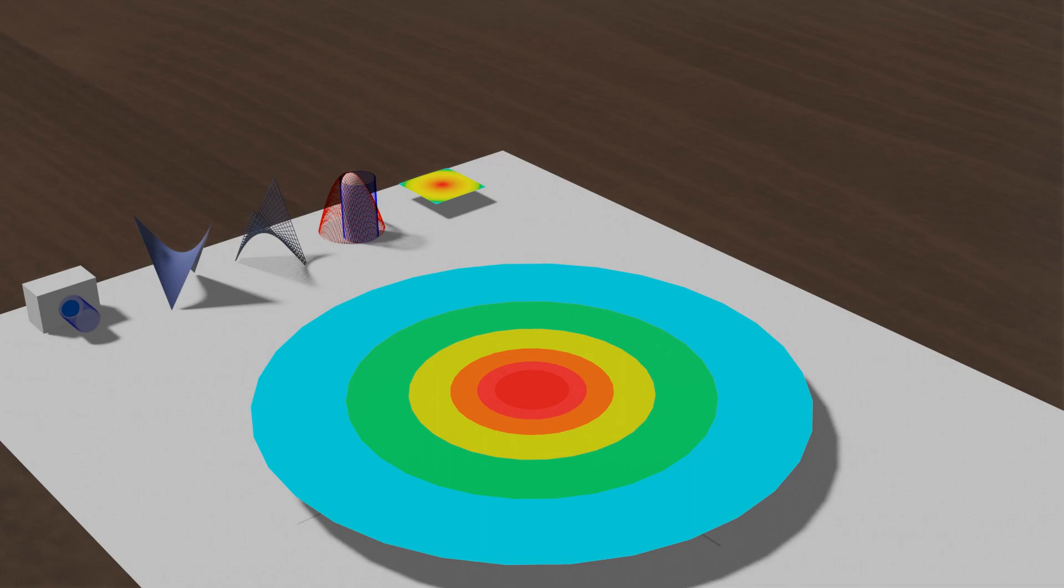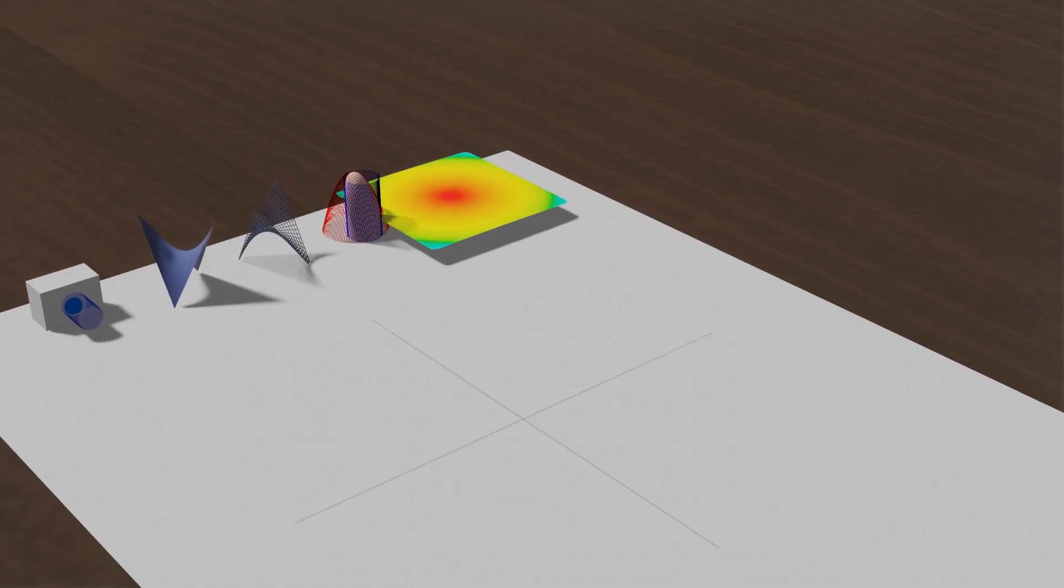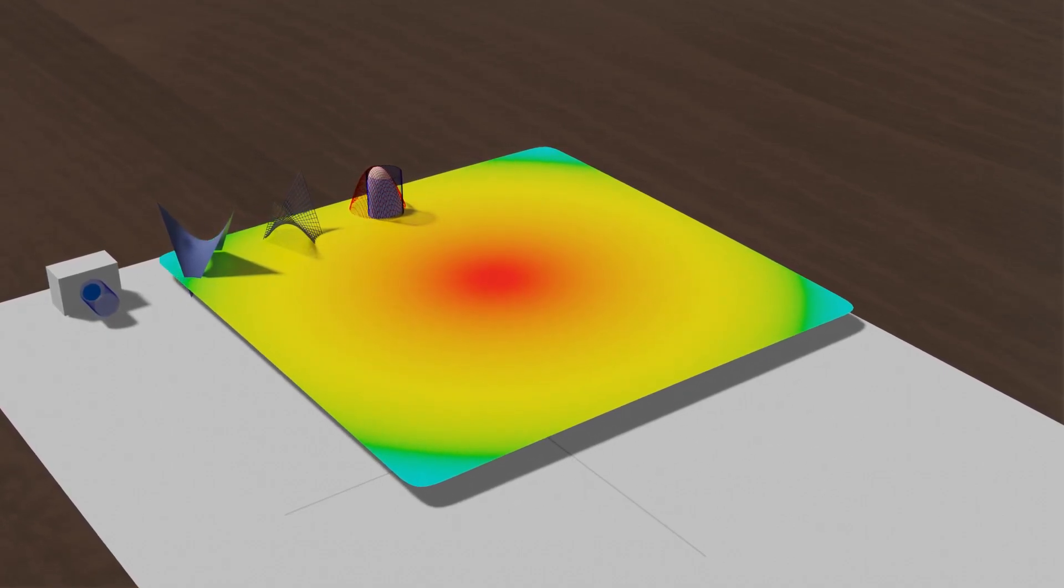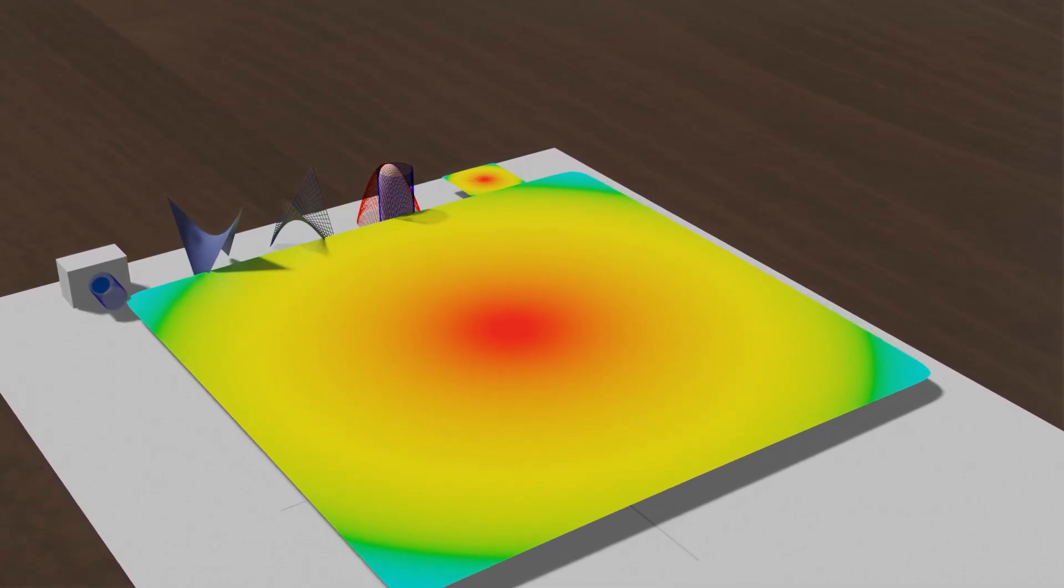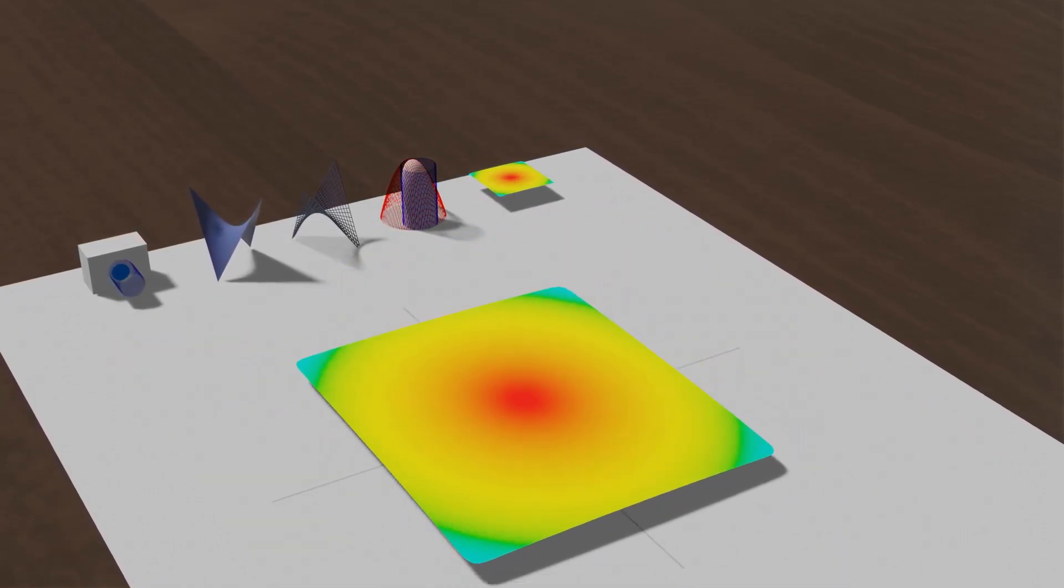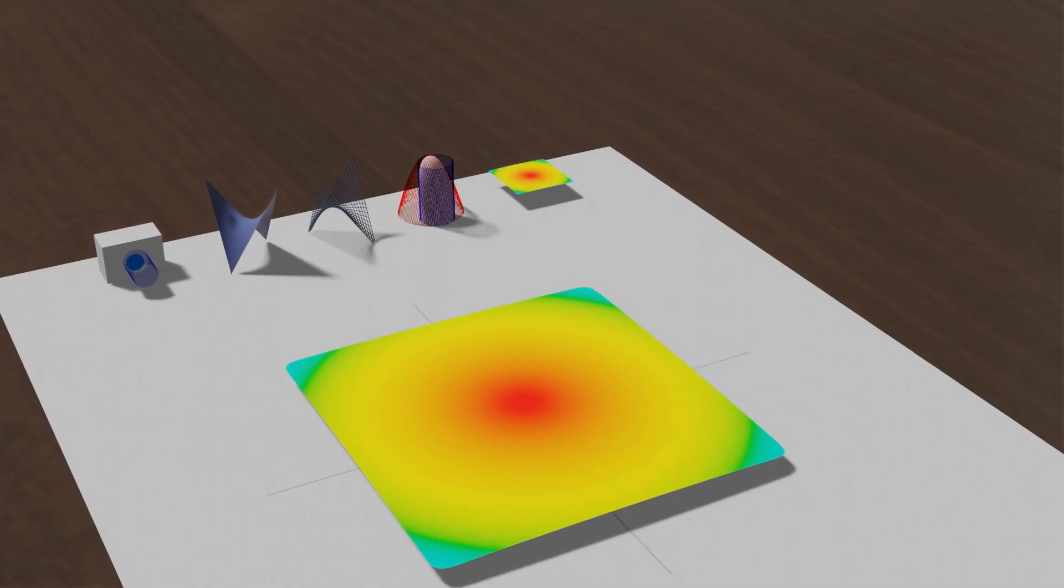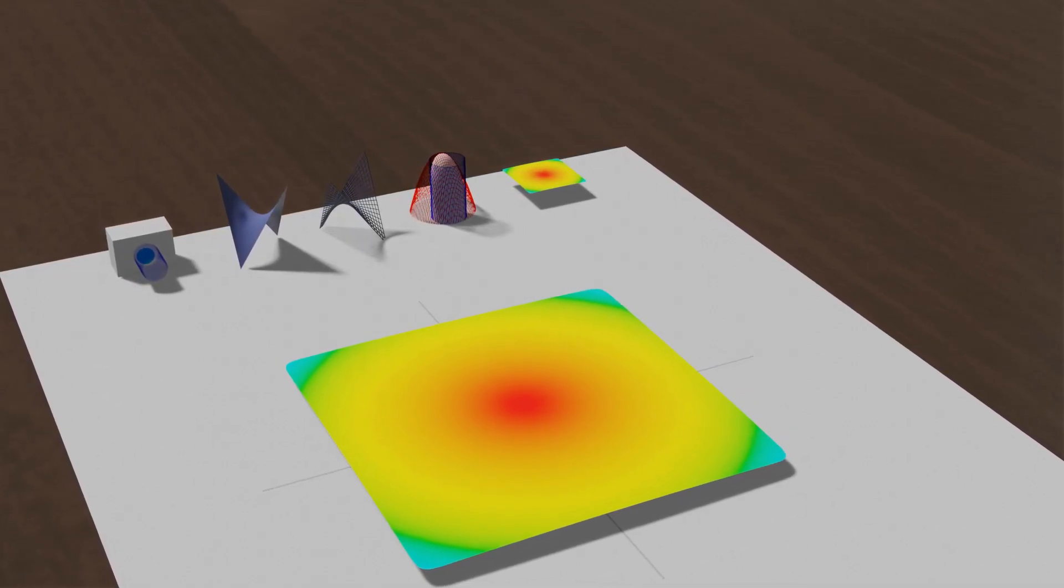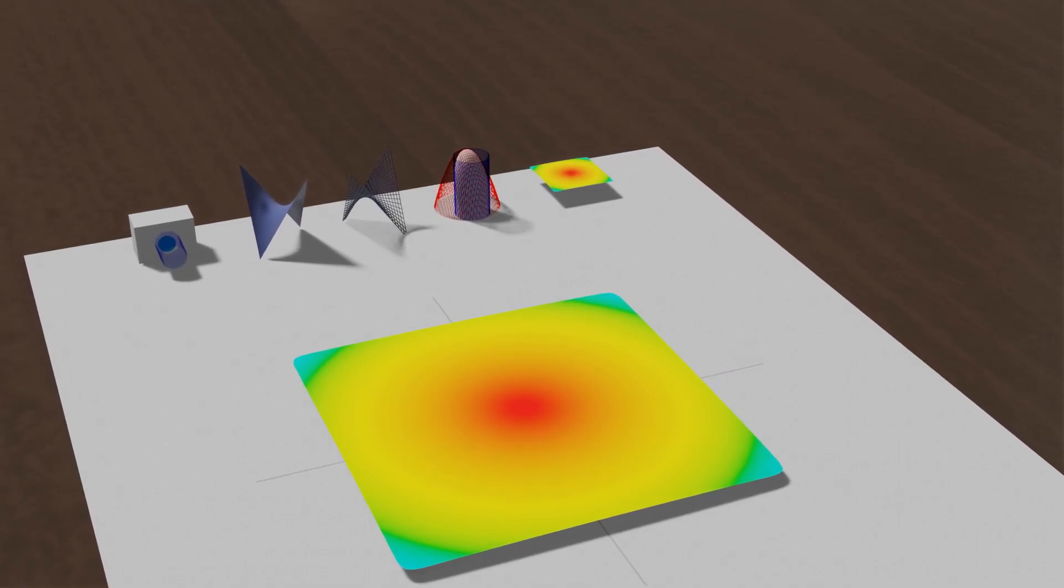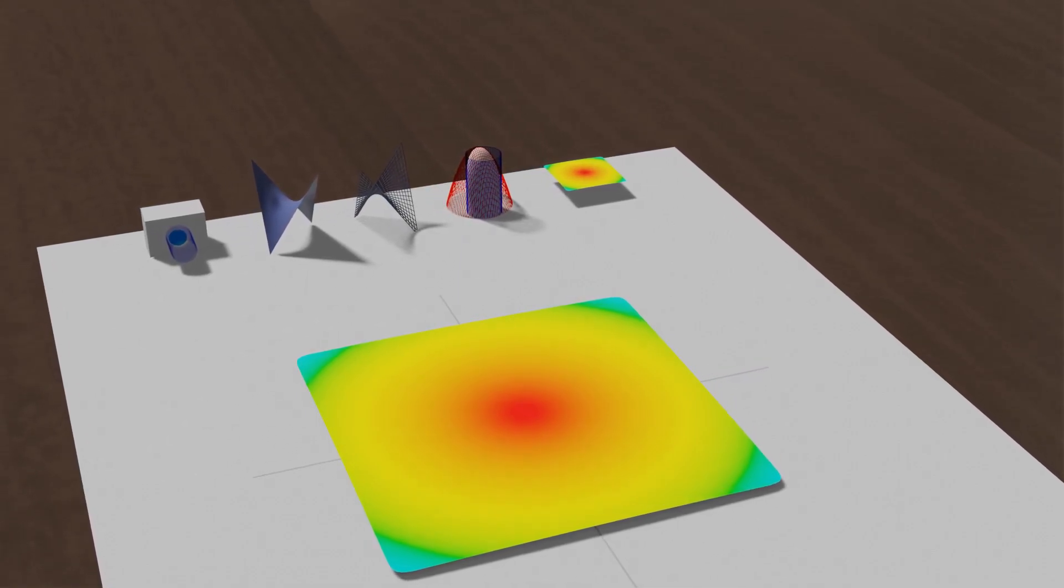But what if we have something like this? What then? And what does the mass have anything in common with double integrals? Well, if we know the density function of the flat body, then we can do the same thing as we did for the volume.